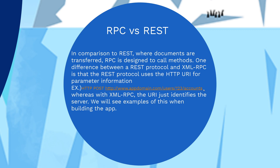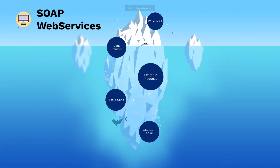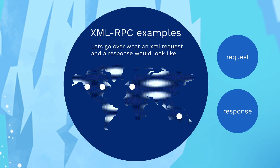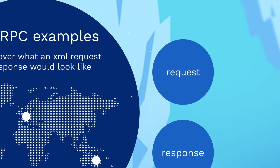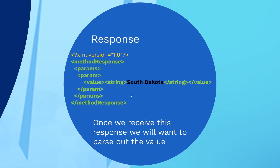We have a POST request and parameters would be passed here through the URI. Let's go over what an XML request and response would look like. Here we have our initial request — it's going to make a POST request using the URI. That method we're going to call is GET STATE, and the parameter we're going to pass is going to be a value of 40. Now let's take a look at the response. We should get an XML response with a value of South Dakota — the 40th state. Once we receive this, we'll go into our code and parse this out so we just have South Dakota to present to the end user.